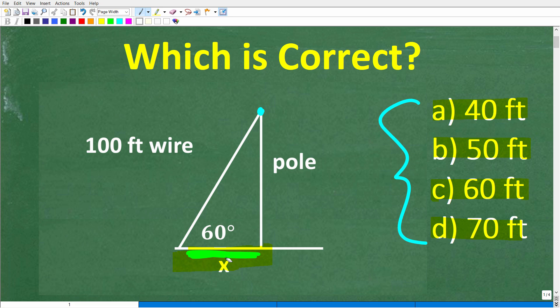Alright, so we have to make an assumption here, and that is that the pole is perpendicular to this line right here, which could represent maybe like the ground. Alright, so once again, we are looking for this distance right here. And which is the right answer? Well, let's go ahead and see it right now.